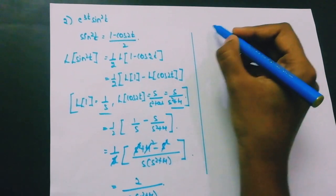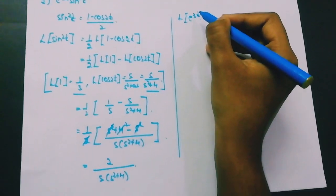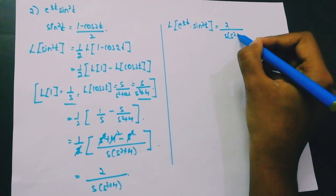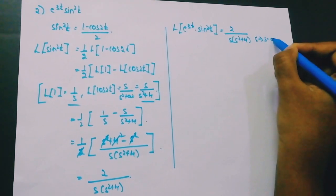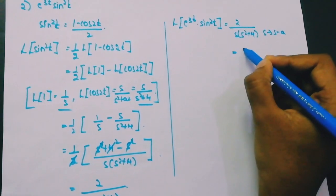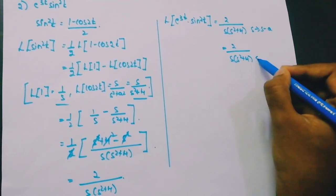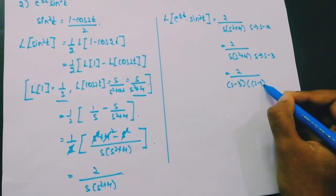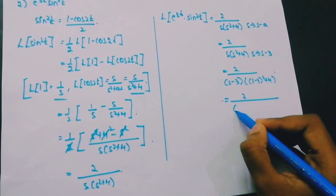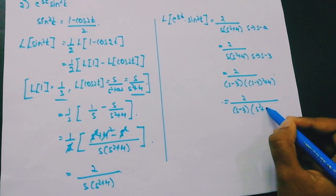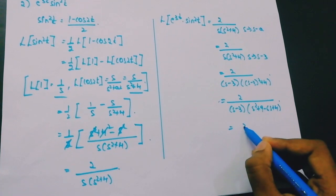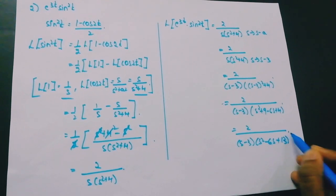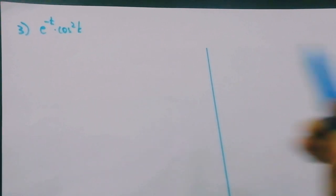Now applying the first shifting theorem for L{e^(3t)·sin²(t)}: we have L{sin²(t)} = 2/(s·(s²+4)) and replace s with s−3. This gives 2/((s−3)·((s−3)²+4)), which expands to 2/((s−3)·(s²−6s+9+4)) = 2/((s−3)·(s²−6s+13)).